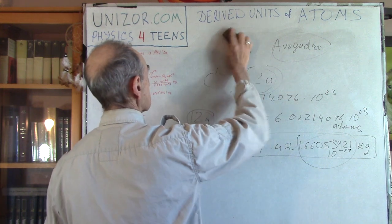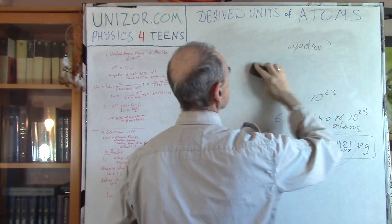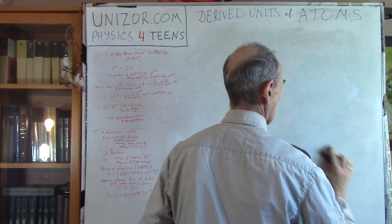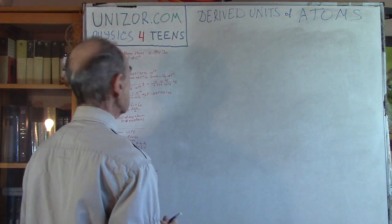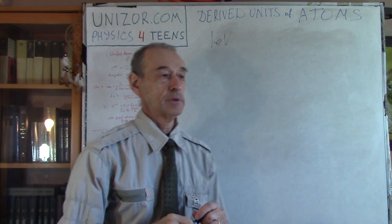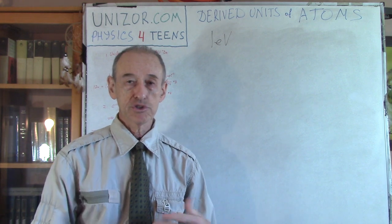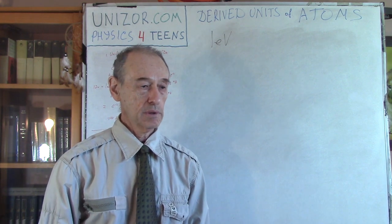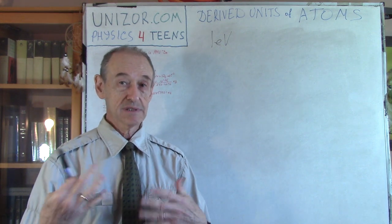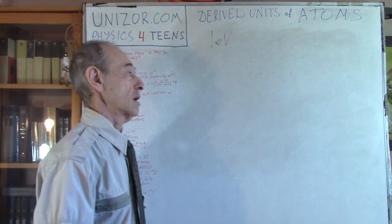Next is unit of energy called one electron volt. If you read about different researches, energy which atoms are exchanging between themselves, you might actually find that this energy is not measured in joules, as SI actually prescribes. It's measured in electron volts. So what is electron volt?